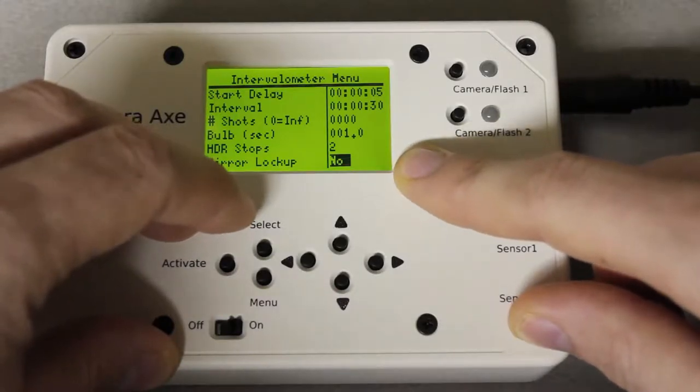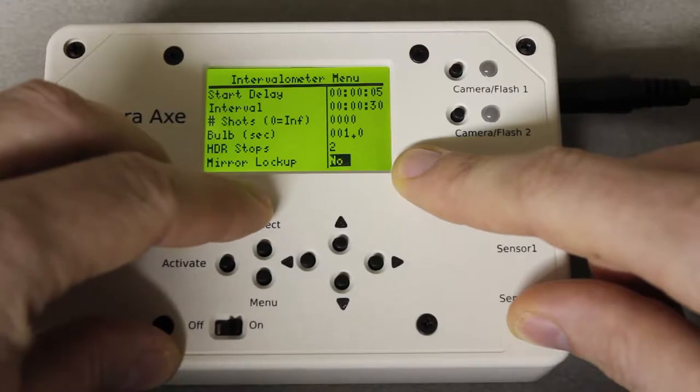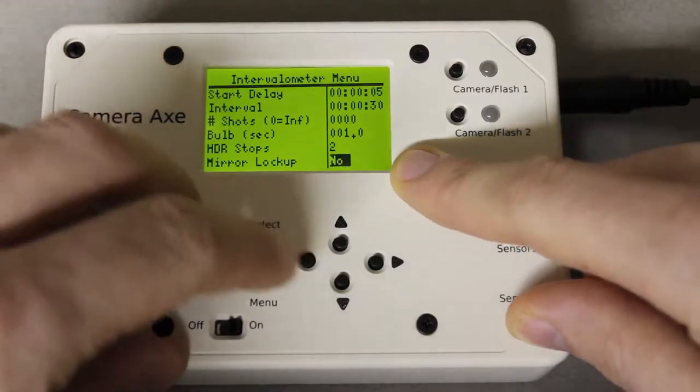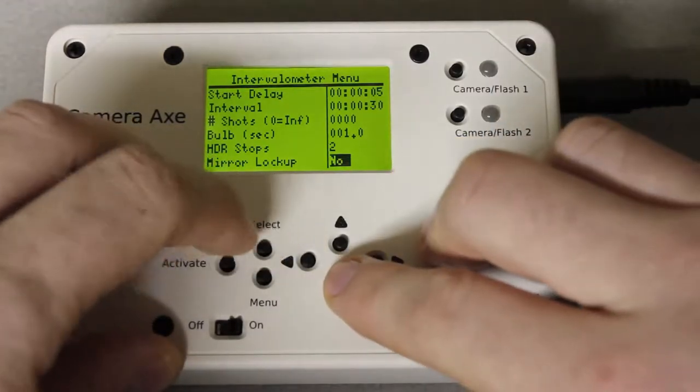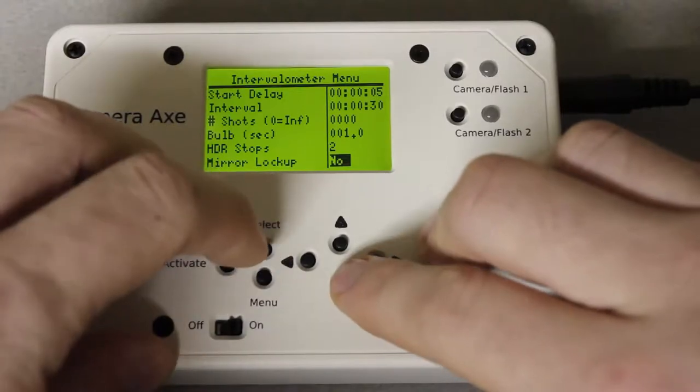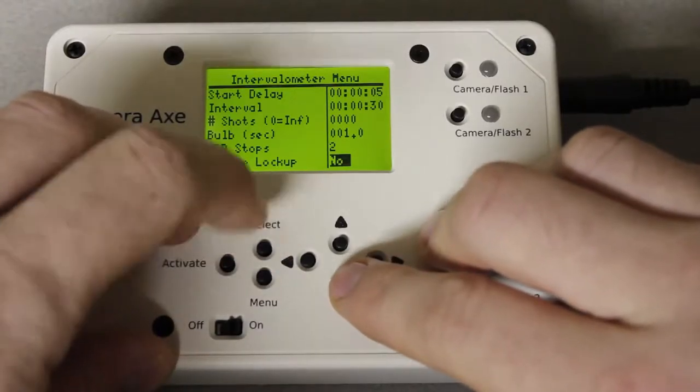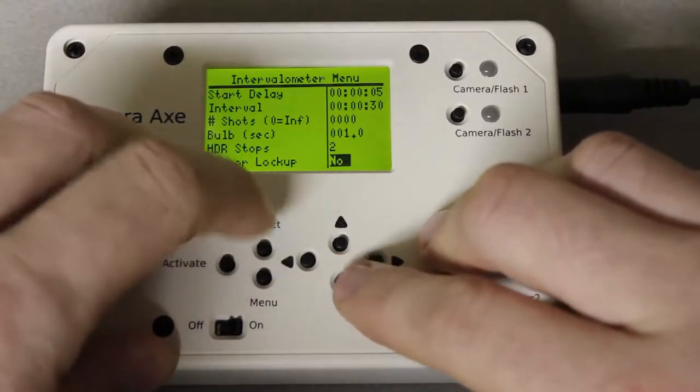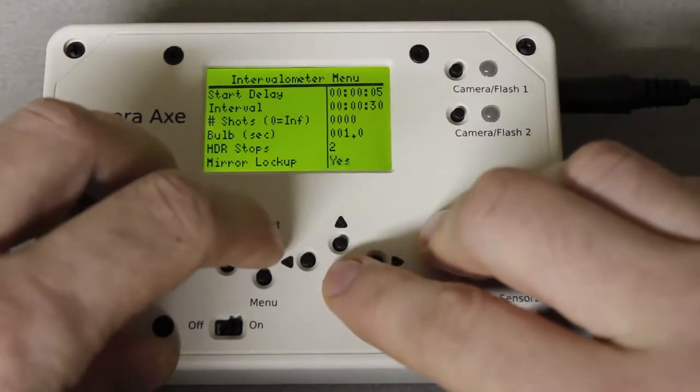So you just have to look into your camera manual and figure out how to use mirror lockup mode. But once your camera is set to use mirror lockup mode then the Camera Axe can take advantage of that. You just change this to yes.